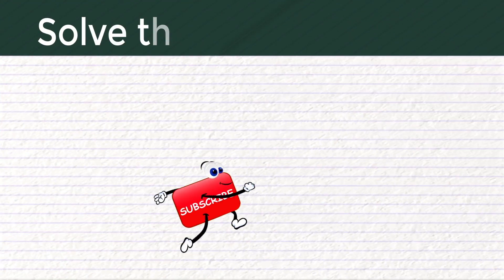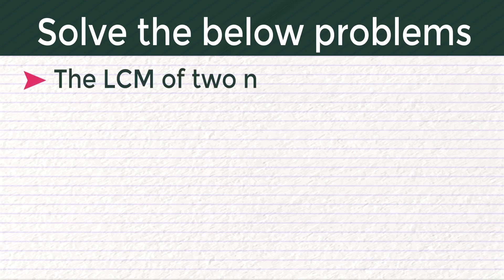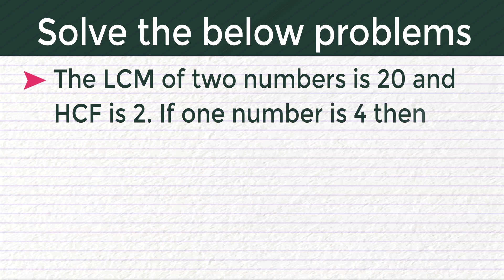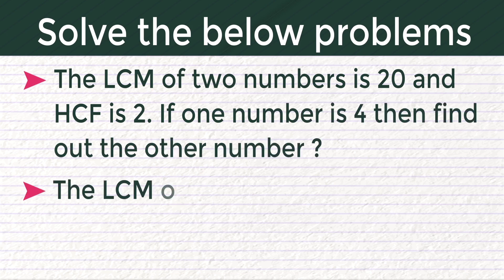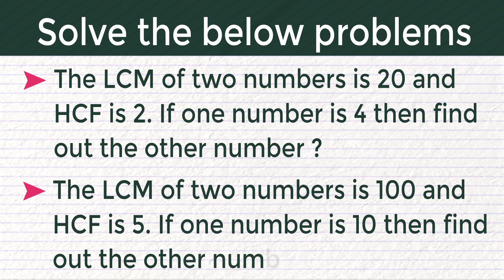If you understand this trick, try solving the below problems and comment your answers. Problem 1: The LCM of two numbers is 20 and HCF is 2. If one number is 4, find the other number. Problem 2: The LCM of two numbers is 100 and HCF is 5. If one number is 10, find the other number.